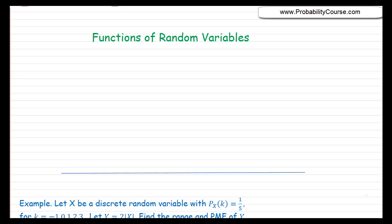Hello. So in this video, we talk about functions of random variables. Suppose that I have a random variable X, and I have another random variable Y which is defined as g of X, where g is a function. For example, Y could be X squared, or Y could be sine of X, and so on.